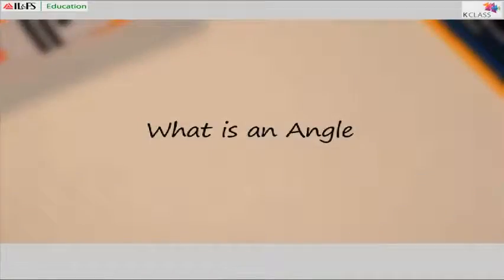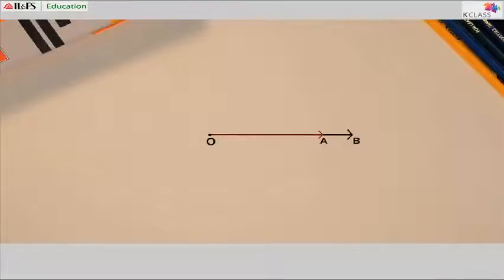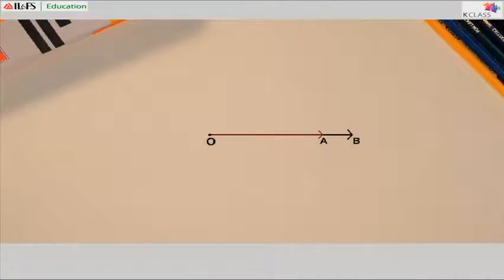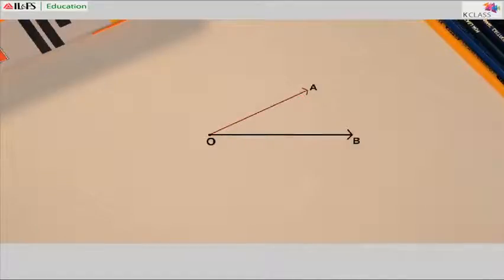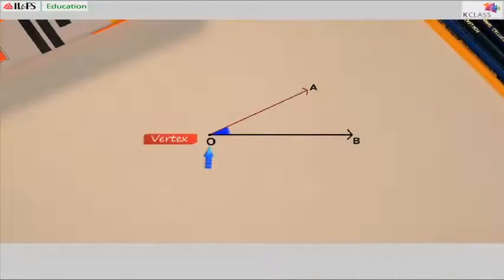What is an angle? Look at this figure. How many rays can you see? OA and OB, right? These are two rays coinciding on each other. They have a common point of origin, O. Now do you see this distance between OA and OB? An angle is formed here at the origin of the two rays. This meeting point, O, is called the vertex.